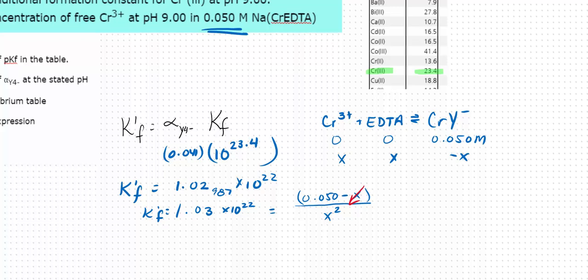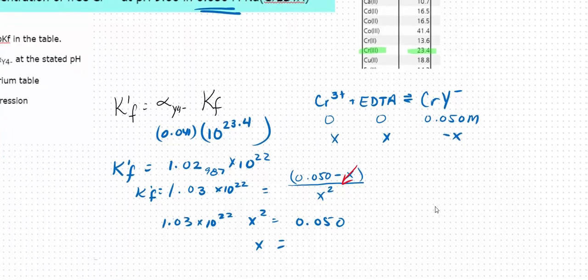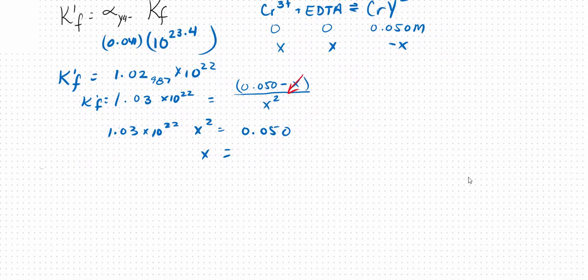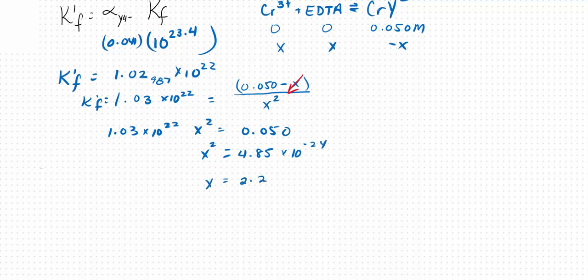So now it's just algebra. I multiply both sides by X squared, and then divide both sides by 1.03, and actually that value is still in my calculator. So rather than round, I'm going to use the value in my calculator. And I get that X squared is 4.85 times ten to the negative 24th. Now take the square root of this value and get that X equals 2.20 times ten to the negative twelve.